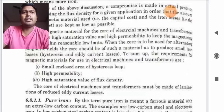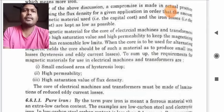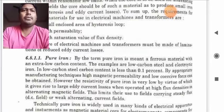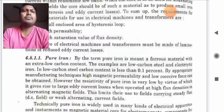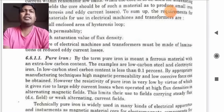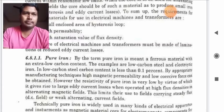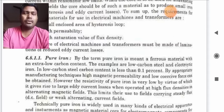The core of electrical machines and transformers must be made of lamination to reduce ED current losses. Now we will discuss about pure iron. By the term pure iron is meant a ferrous material with an extra low carbon content. The examples are low carbon steel and electrolytic iron.